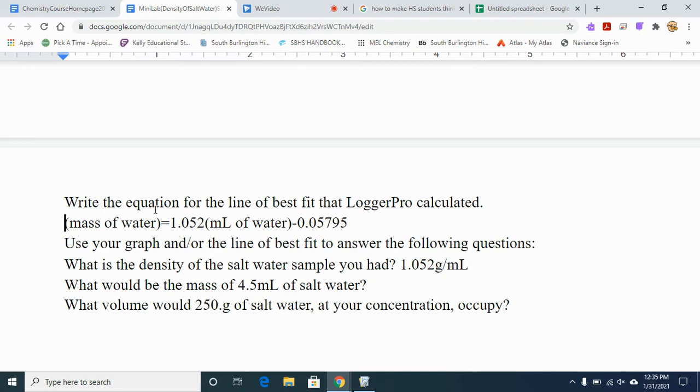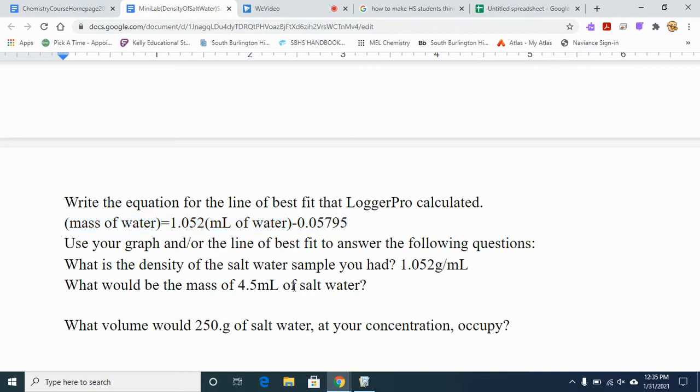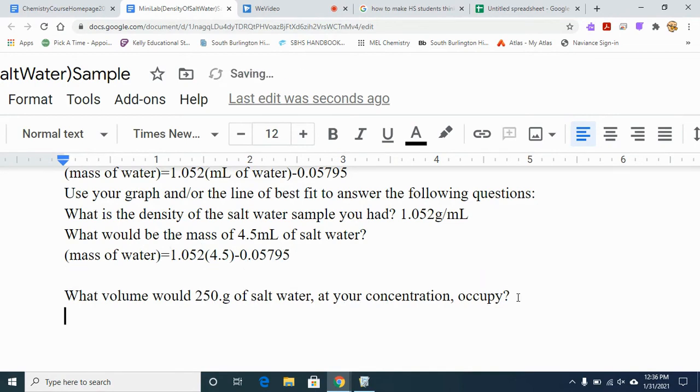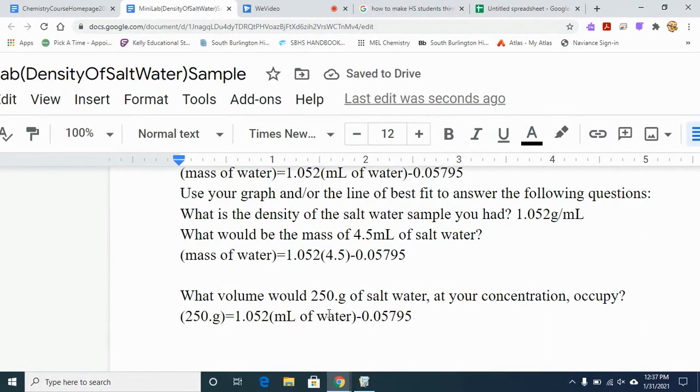Now we're going to use this equation that we got here to answer these last two questions. I'm going to copy our equation as what would be the mass of 4.5 milliliters of salt water. And so we can take milliliters of salt water and plug in 4.5. And now the mass we can calculate at 1.052 times 4.5 minus 0.05795. To solve for this last question, instead of subbing in the 4.5 milliliters for milliliters of water, we would sub in the 250 grams for the mass of water. From there it becomes an algebraic situation where you would add this amount to both sides to move it to the other side. And then you would divide by 1.052 and you would have a volume in milliliters of water.